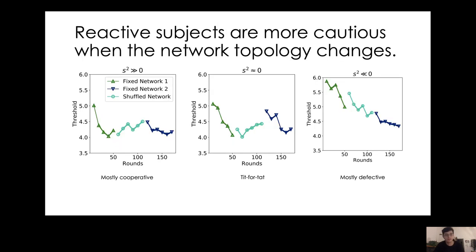In the network setting, we see the same behavior. For tit-for-tat, we see a restart of their cautiousness, and a steady decline for the mostly defective people.